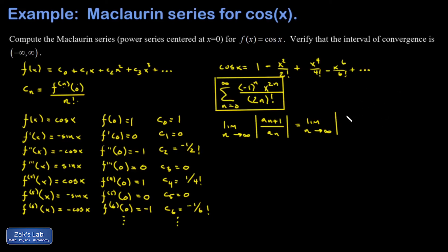When I take the absolute value, the negative one to the n doesn't matter, so I'm not going to write those. My n plus one term looks like that, and then I divide by the nth term, which is the same as multiplying by the reciprocal of it. So I get a 2n factorial in the numerator, x to the 2n in the denominator.